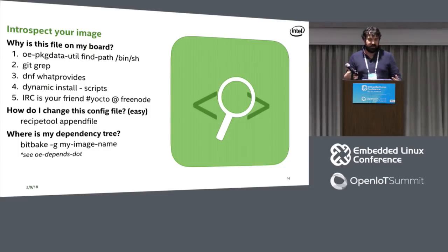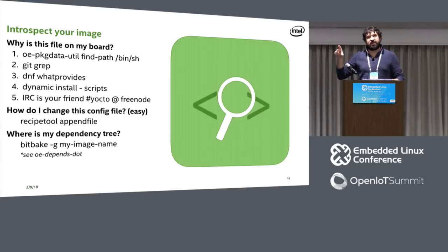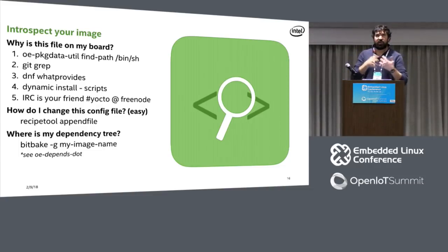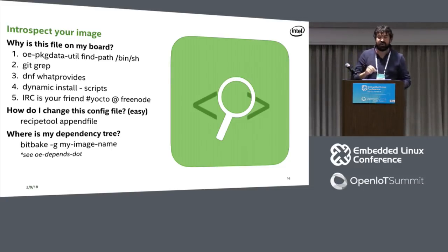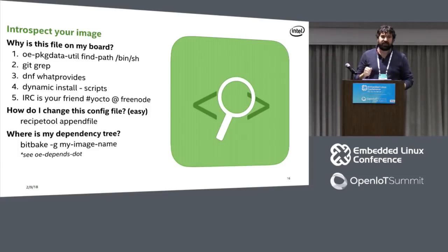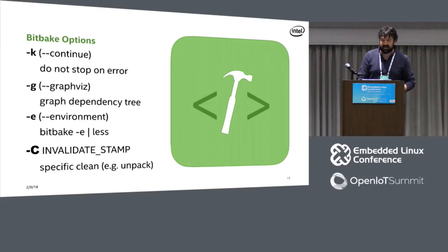The last one, which flows naturally from appending configs, is the dependency tree. When you're trying to figure out why stuff is on your board, you'll often want to know how the dependency tree worked out. You might know that BusyBox put something on your system, but what put BusyBox on the system? BitBake has an option, dash G, that will generate — using GraphViz — a dependency tree for you. And coming in 2.5, but not out yet, is oe-depends, which will let you introspect specific parts of that dependency tree without having to look at the gigantic full graph.